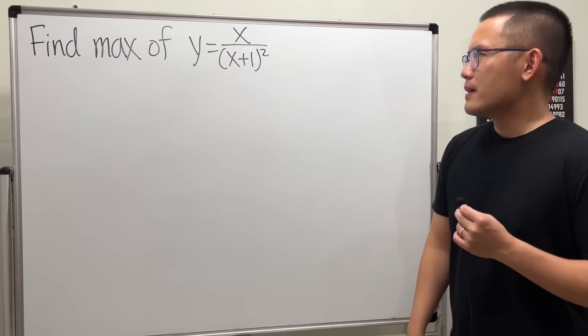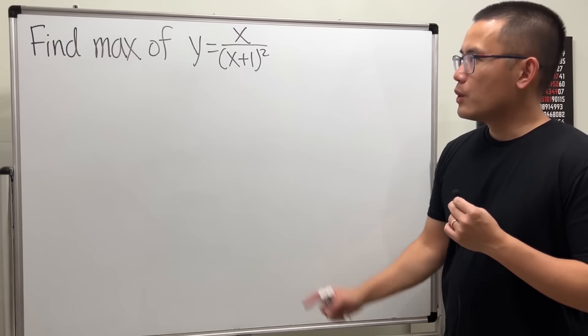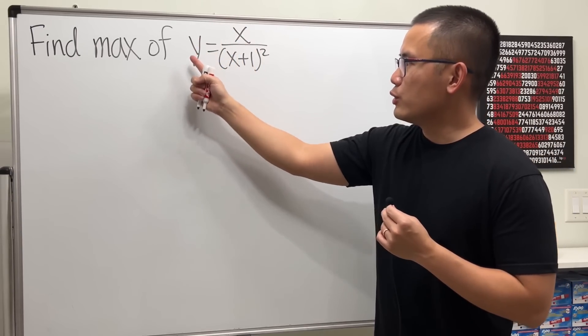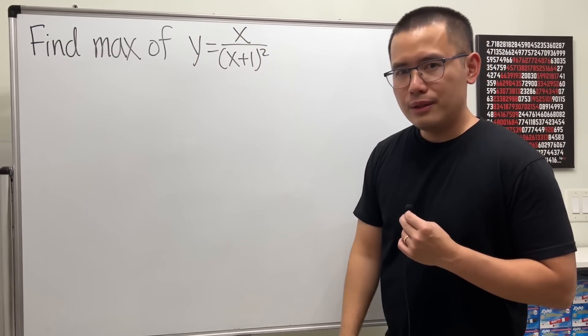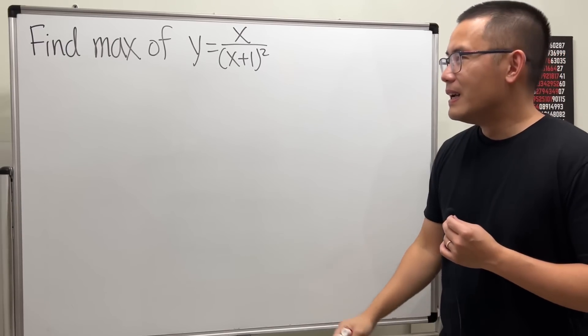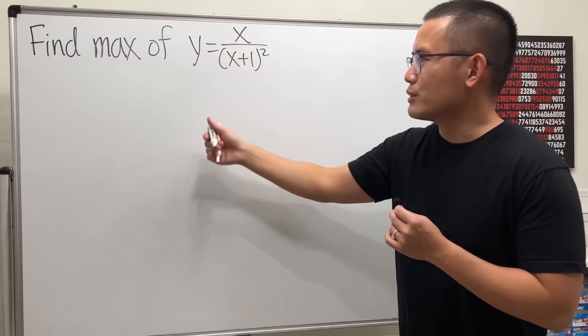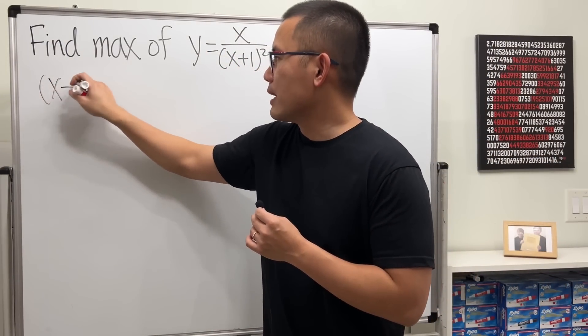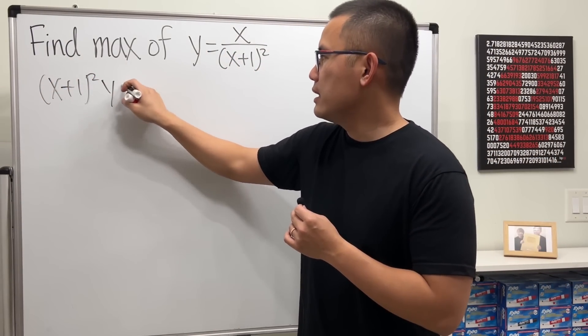But anyway, how can we approach this? Well, this right here is just like a rational equation, and in the algebra world, we don't like to see fractions. So maybe let's multiply this to both sides, so we get (x+1)² times y equals x.